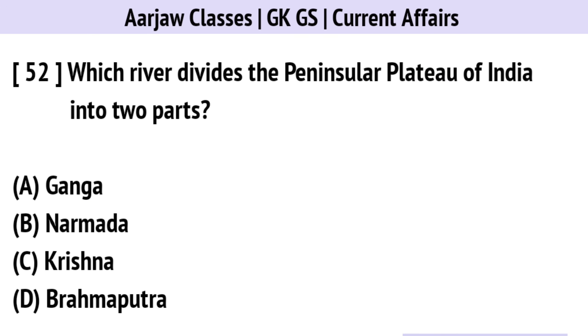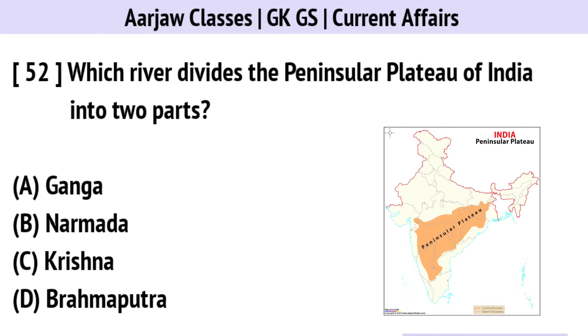Which river divides the peninsular plateau of India into two parts? Correct option is B — Narmada.